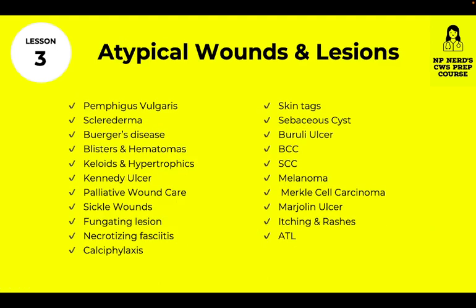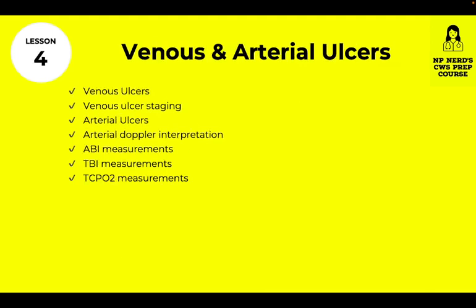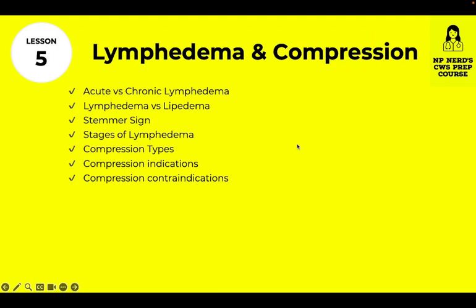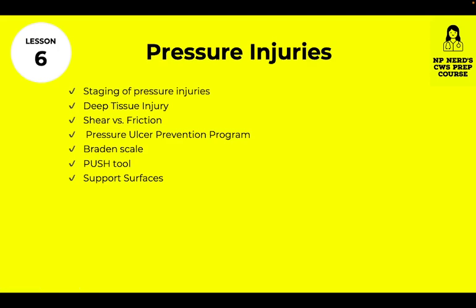Lesson 3 covers Atypical Wounds and Lesions. Lesson 4 covers venous and arterial ulcers, measuring and interpreting ABI, interpretation of arterial Doppler, TBI measurements, and TCPO2 measurements. Lesson 5 covers lymphedema and compression — stages of lymphedema, what is a Stemmer sign, and compression types. Lesson 6 covers pressure injuries, including stages, deep tissue injury, shear and friction, the Braden scale, push tool, and different support surfaces.